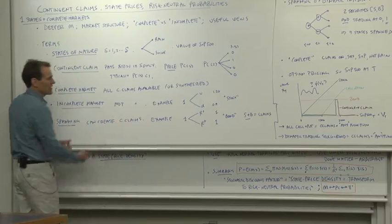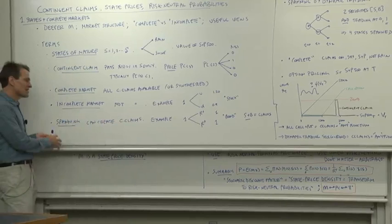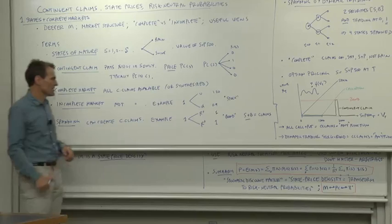Sometimes you can create contingent claims from other underlying securities, and that's called spanning. If you can span contingent claims with other securities, then you can create them even if they don't exist. So here's an example.